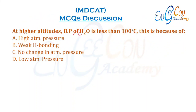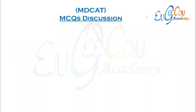At higher altitudes, the boiling point of H2O is less than 100°C. This is because at higher altitudes, the atmospheric pressure is low, and therefore the boiling point is low.